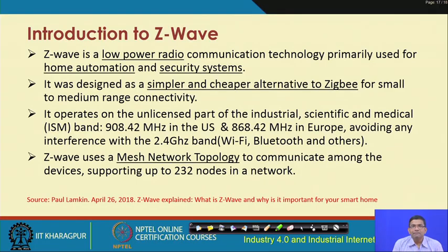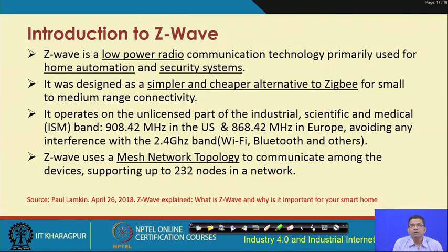Z-Wave operates in the ISM band. In the US, it specifically uses the 908.42 MHz band. In Europe, it uses the 868.42 MHz band, and it avoids interference with the 2.4 GHz band used by Wi-Fi, Bluetooth, and other protocols. Z-Wave uses a mesh network topology to communicate among devices, supporting up to about 232 nodes in a network — sufficient for home automation and even industrial applications.